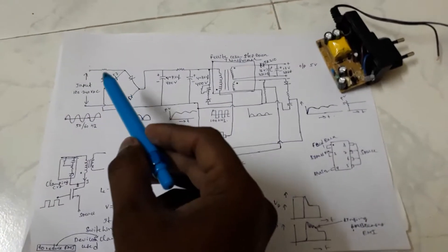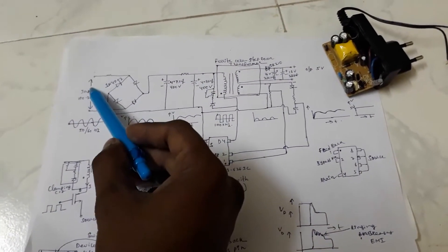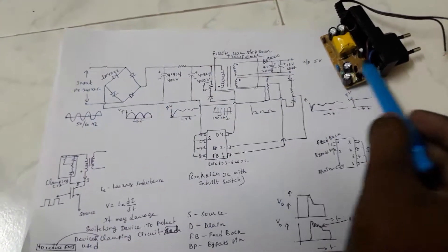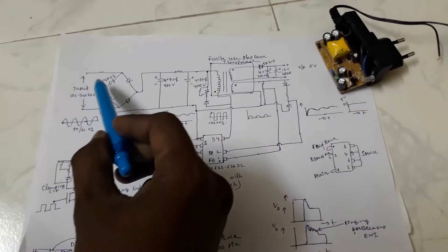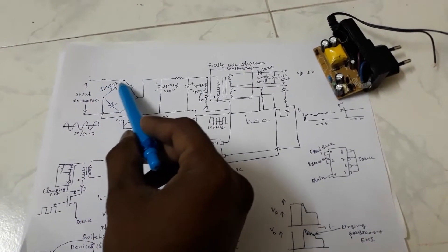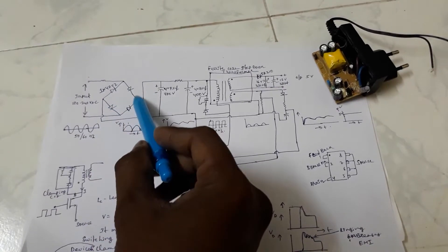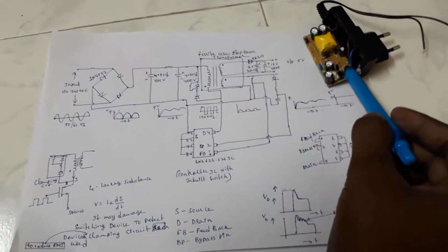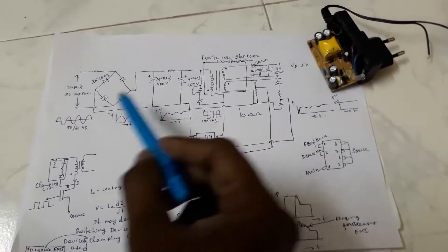The input AC waveform is fed through a resistor, which is a current limiting resistor, and it is fed through a bridge rectifier. These are the four diodes which are bridge rectifiers.